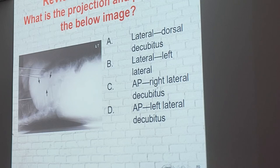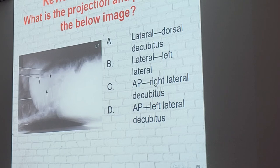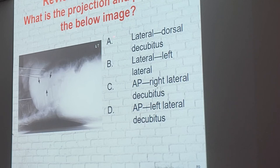For another image: what's the projection and position? It's a lateral projection — so answers C and D can be knocked off. The position is dorsal decubitus. How do you know it's dorsal decubitus rather than a regular lateral? Look for the arrow marker indicating which side is up. If you see one of these little arrows, that's always an indication it's some kind of decubitus. No arrow on a regular lateral — so the arrow is your cheat code.